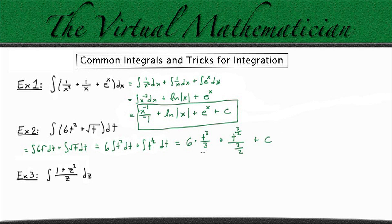Now, to simplify this, notice that 6 divided by 3 is 2, so we can rewrite this as 2t cubed. And then since we're dividing by a fraction here, we can take the reciprocal of the denominator and multiply. So this is going to be plus 2 thirds times t to the 3 halves plus c. And that is how we evaluate example 2 and reduce it.